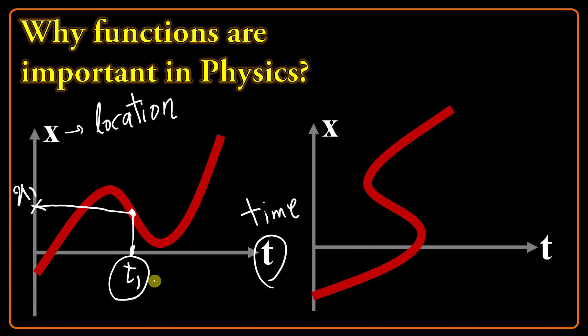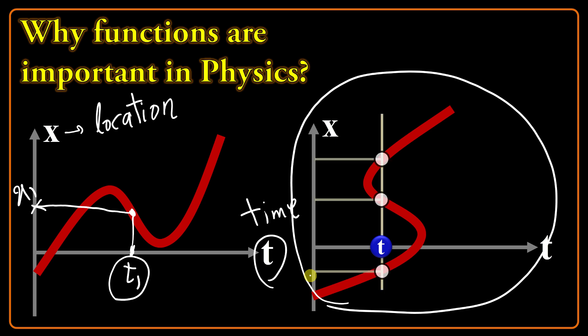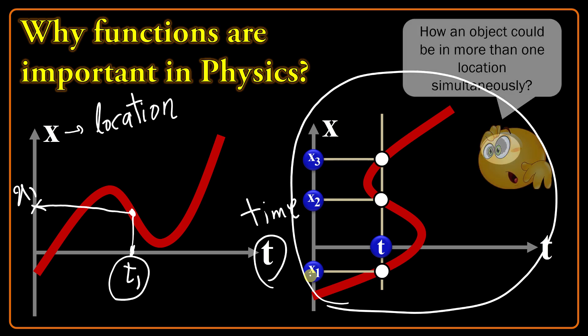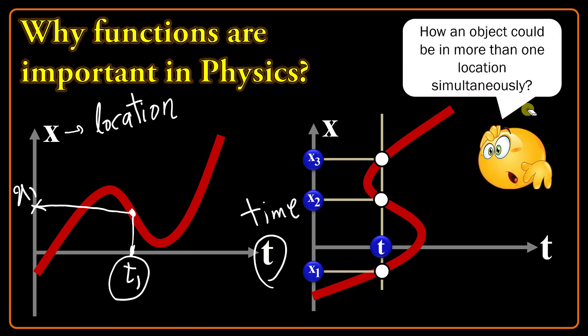But the right side of this slide indicates an impossible case in which, for example here, if I give the t, the graph gives me three outputs. How is it possible? Pay attention: how an object could be in more than one location simultaneously? This is why functions are so important in physics.